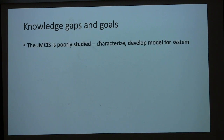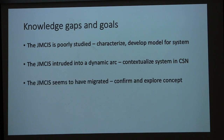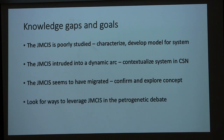Our first and biggest knowledge gap is that the system is relatively undescribed, so our first goal is to characterize it and develop a model for how it evolved. Then we have this dynamic setting the Jackman intruded into — with migration and regional focusing — so what does the Jackman's presence mean in this context? There's also the migrating map pattern: we need to confirm that migration actually happened and things young to the northwest, and then explore that concept. Finally, we'll try to leverage the system to give us new insights about the petrogenetic debate on where chemistry is set.